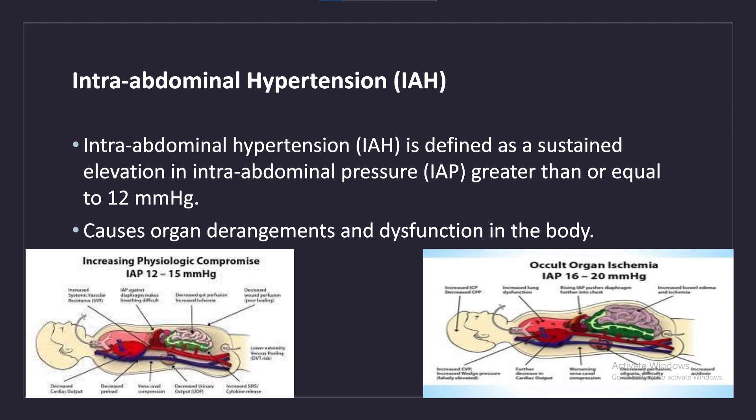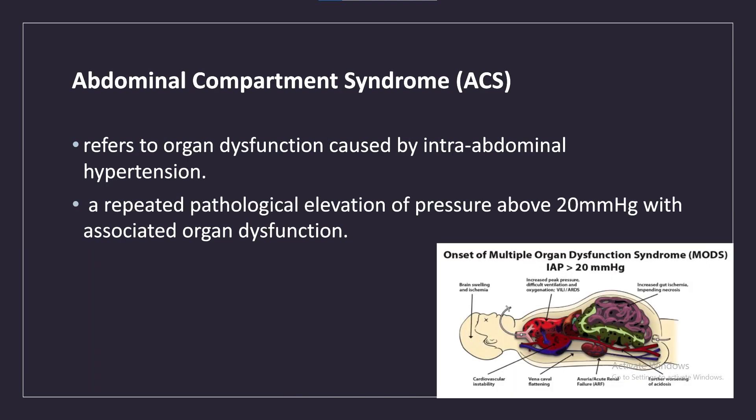Intra-abdominal hypertension (IAH) is defined as a sustained elevation in intra-abdominal pressure (IAP) greater than or equal to 12 mmHg, causing organ derangements and dysfunction in the body. Abdominal compartment syndrome (ACS) refers to organ dysfunction caused by intra-abdominal hypertension — a repeated pathological elevation of pressure above 20 mmHg with associated organ dysfunction.